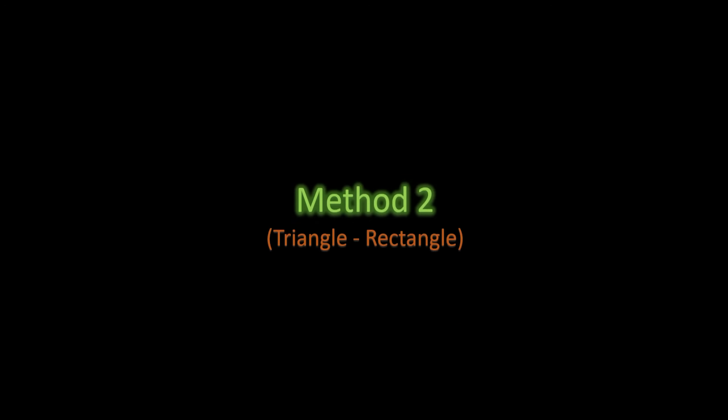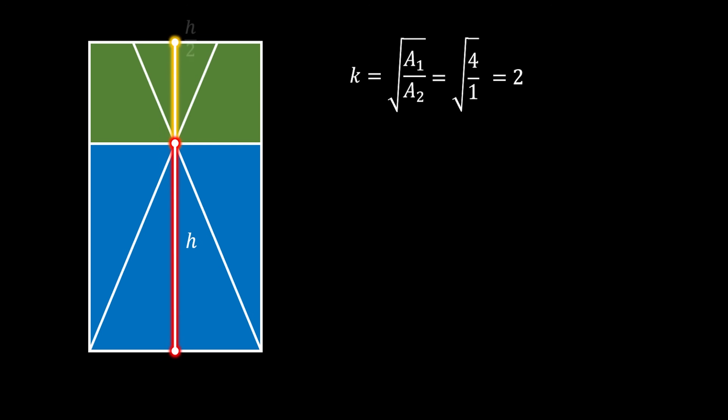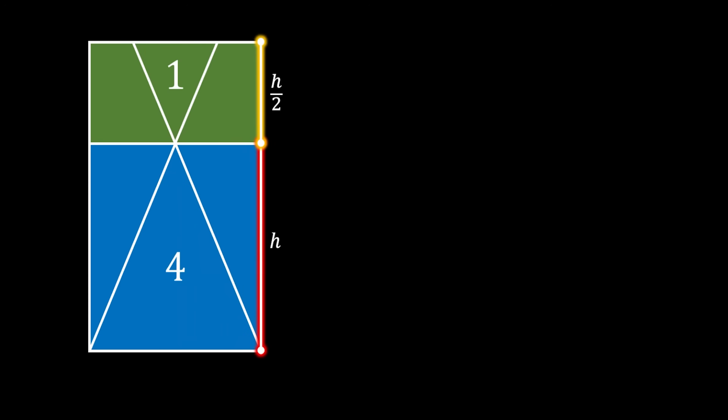Now let me show you the second method, which will use the relation between the triangle and the rectangle. We will start by pulling a horizontal line through the intersection point between our two triangles, and in this way we will form two smaller rectangles. From the previous method — using angles formed by intersecting lines and by parallel lines — we know that those two triangles are similar, and the factor of similarity is equal to the square root of the relation between their areas, which we calculated to be equal to 2. This means that if we label the height of our bigger triangle as h, the height of our smaller triangle must be h over 2. Furthermore, the heights of those two triangles are equal to the heights of our two rectangles.